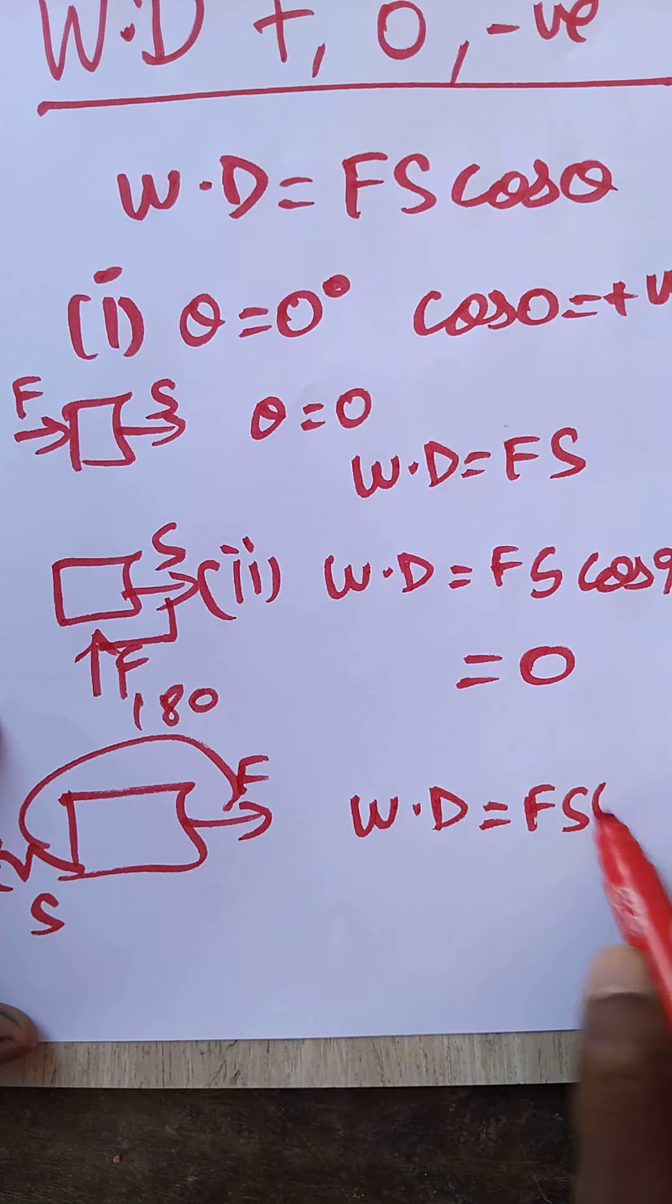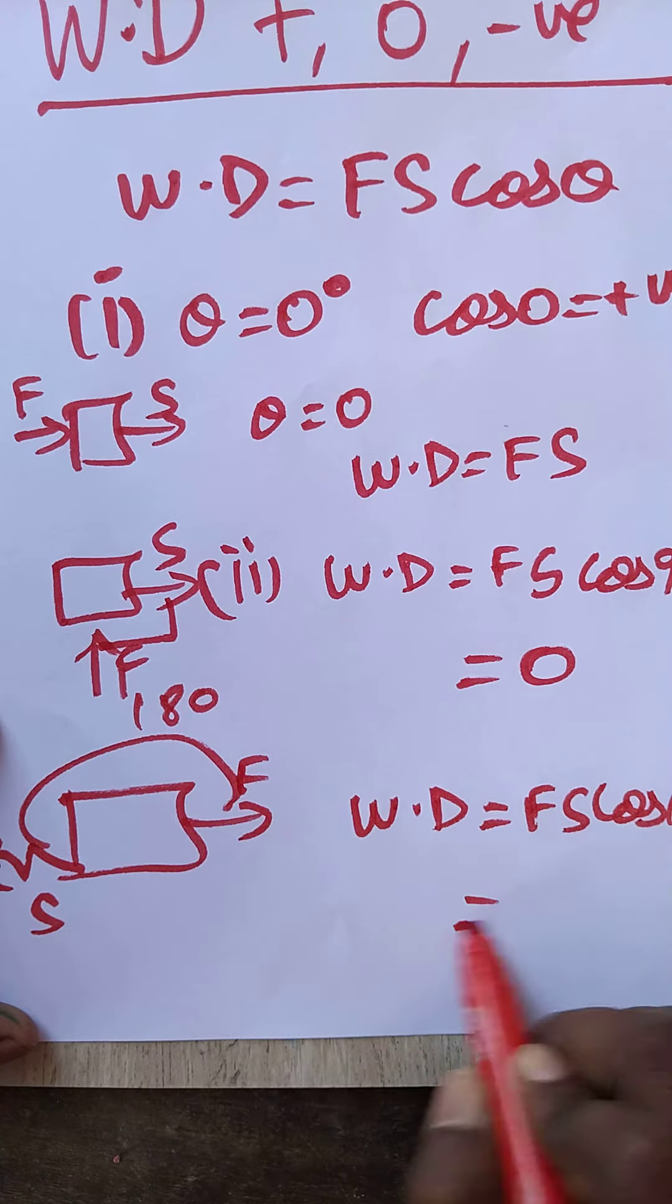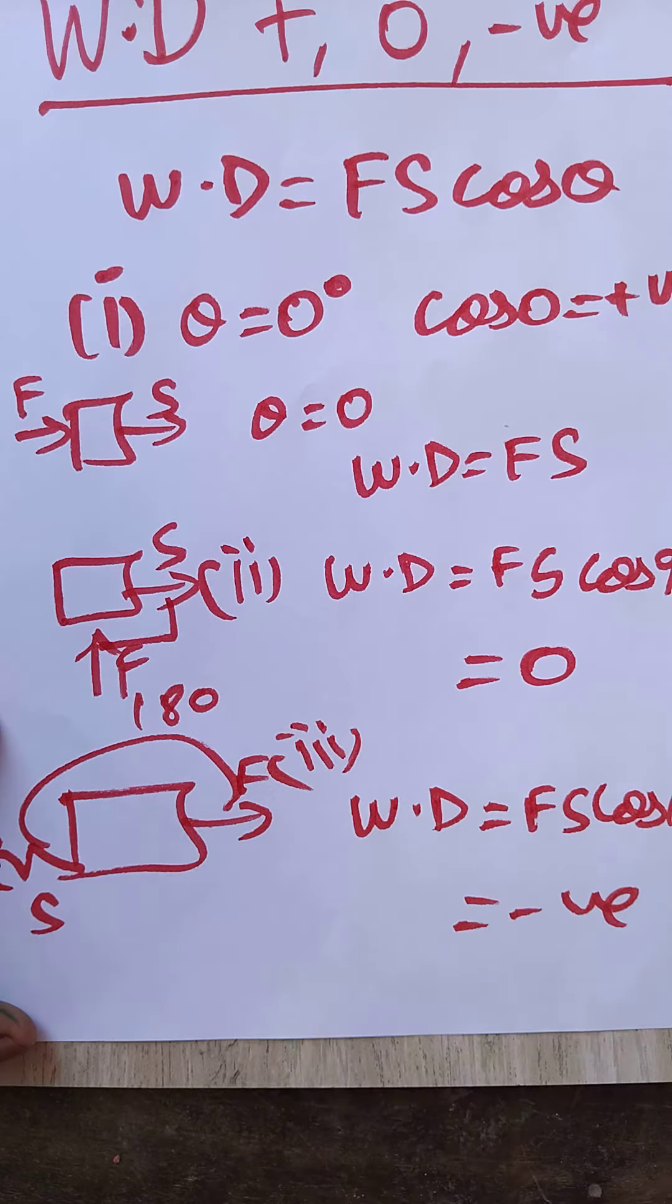Cos 180 is negative one, so it is going to be negative work done. Thank you for watching my channel. If you like my channel, please subscribe.